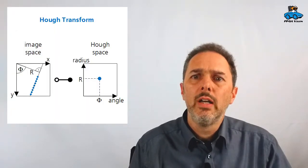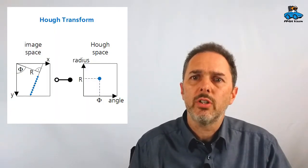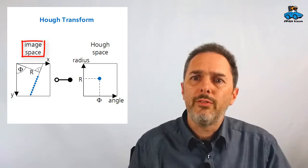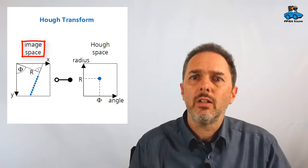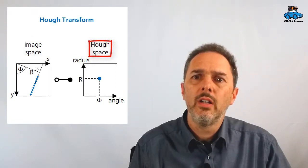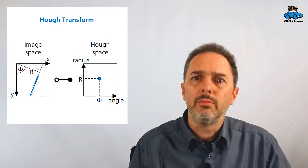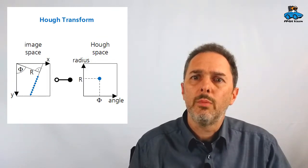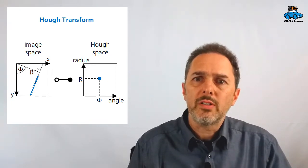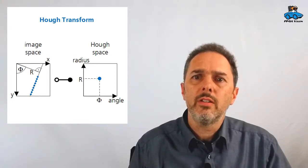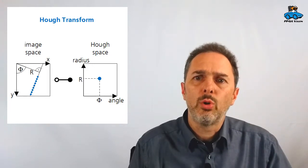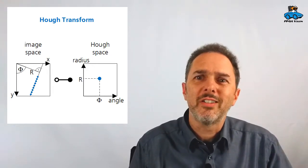The Hough transformation is a transformation between your image region, where you have the different edges, into a Hough space, where the edges you are having are sorted or represented due to their position and their angle. We will not cover the Hough transformation in this FPGA vision lecture. We will focus on the lane detection. But of course, if you are interested, you are welcome to expand the algorithm to really interpret the edges and find the lanes in the image.